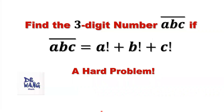Hello, everyone. I'm Dr. Wen. Here is the question: Find the three-digit number ABC if ABC equals A factorial plus B factorial plus C factorial. This is a challenging question.